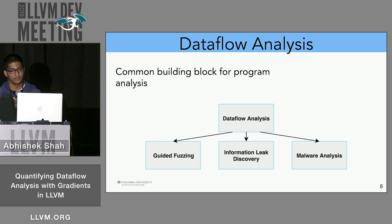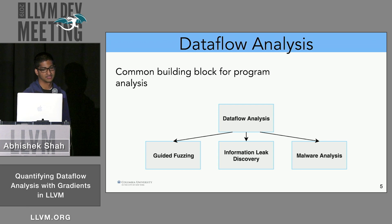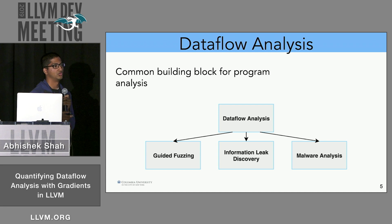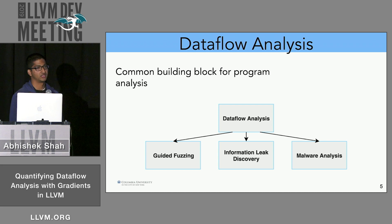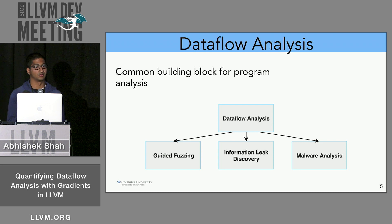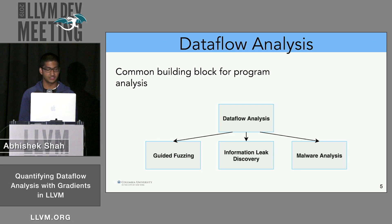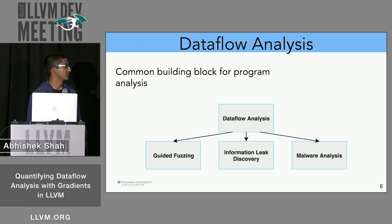There's also a connection between data flow analysis and other program analysis tasks. In guided fuzzing, you can identify which bytes affect which branch variables and focus on those bytes. In information leak discovery, you can detect which inputs affect CPU or memory usage. It's also being used in malware analysis.